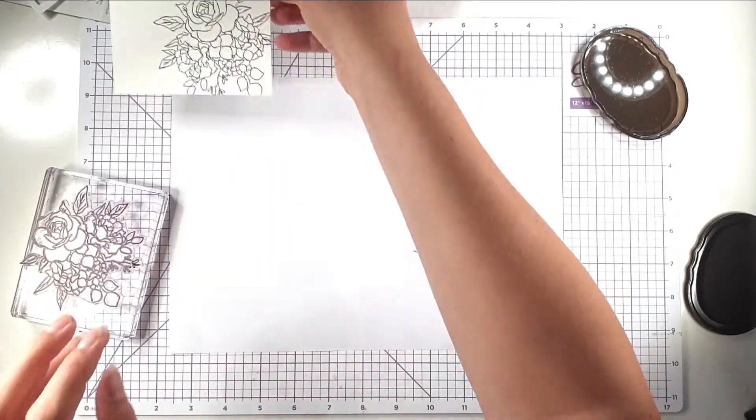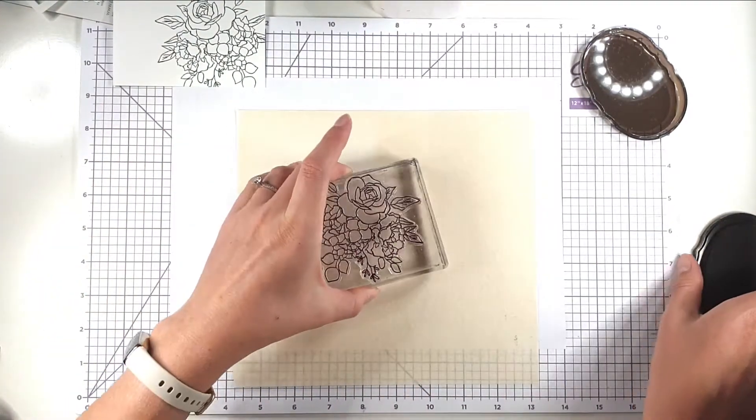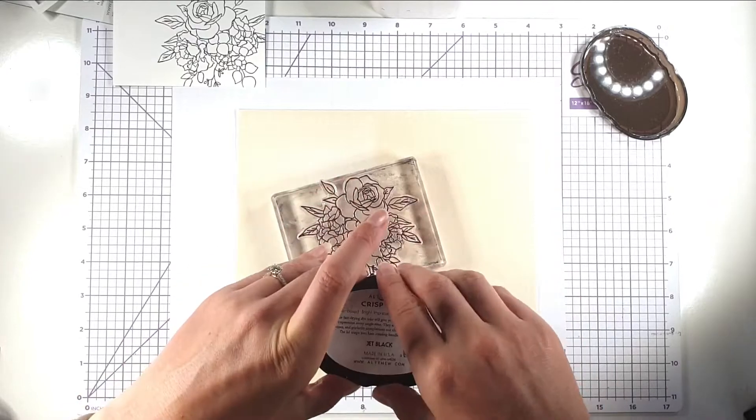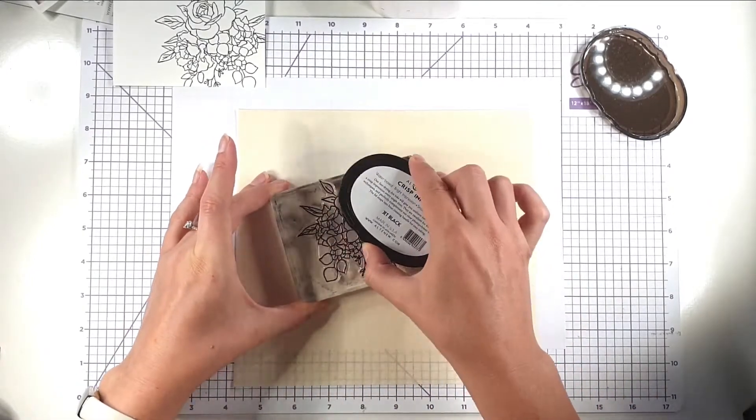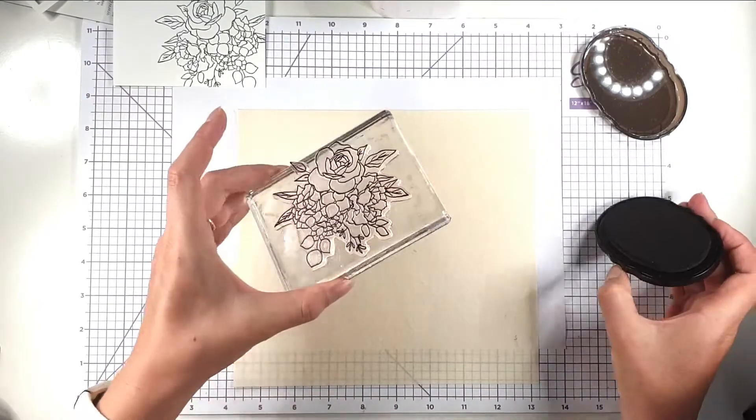Then I want to stamp it again, this time I'm going to stamp it on some masking sheet. This is some Sticks 2 masking sheet, but a lot of brands do this, it doesn't need to be a certain brand, so if you've got something in your stash use that.